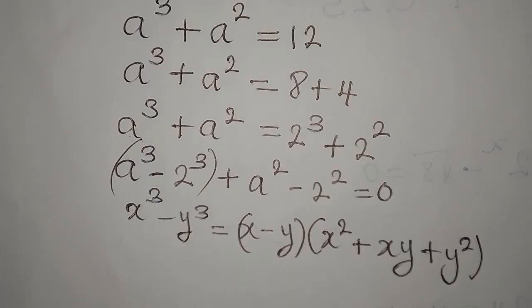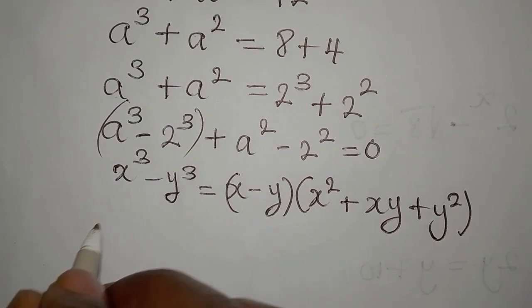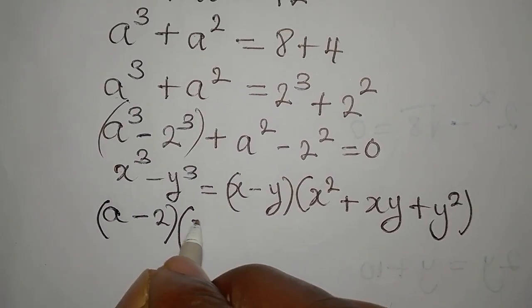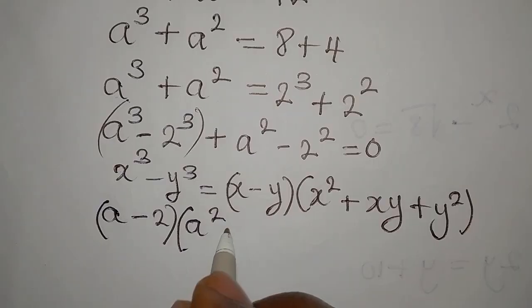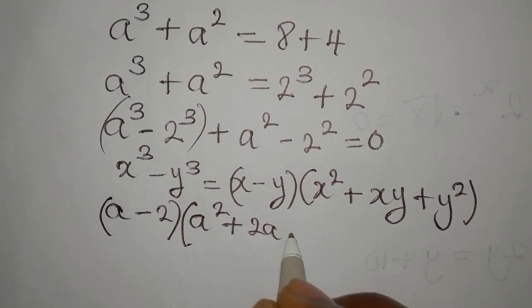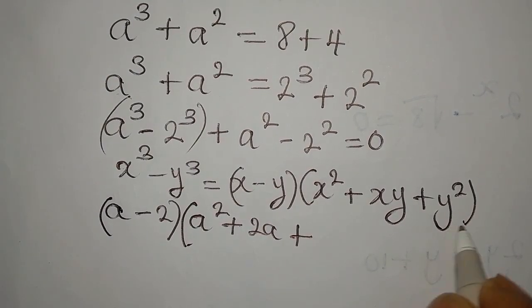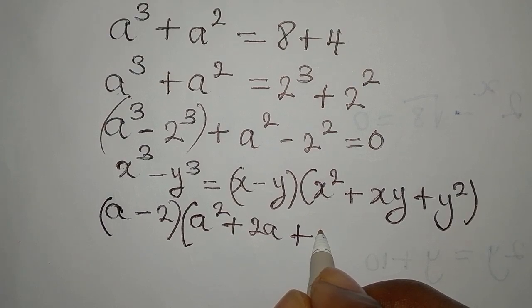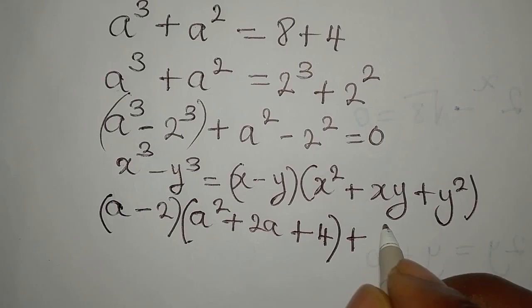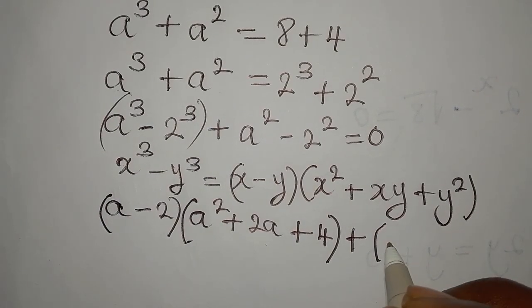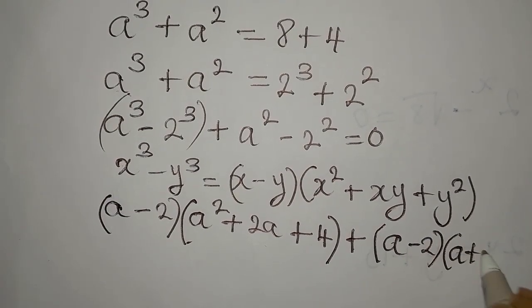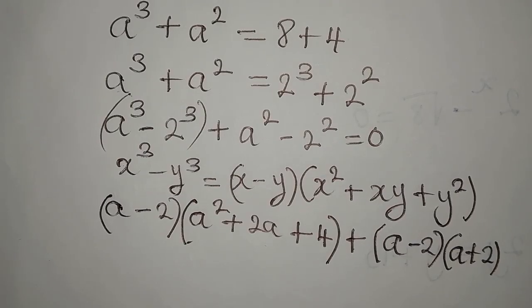So our (x - y) becomes (a - 2). Then x times x² gives a², plus xy gives a times 2 which is 2a, plus y² gives 2² = 4. Then we also handle the difference of two squares: a² - 2² = (a - 2)(a + 2).